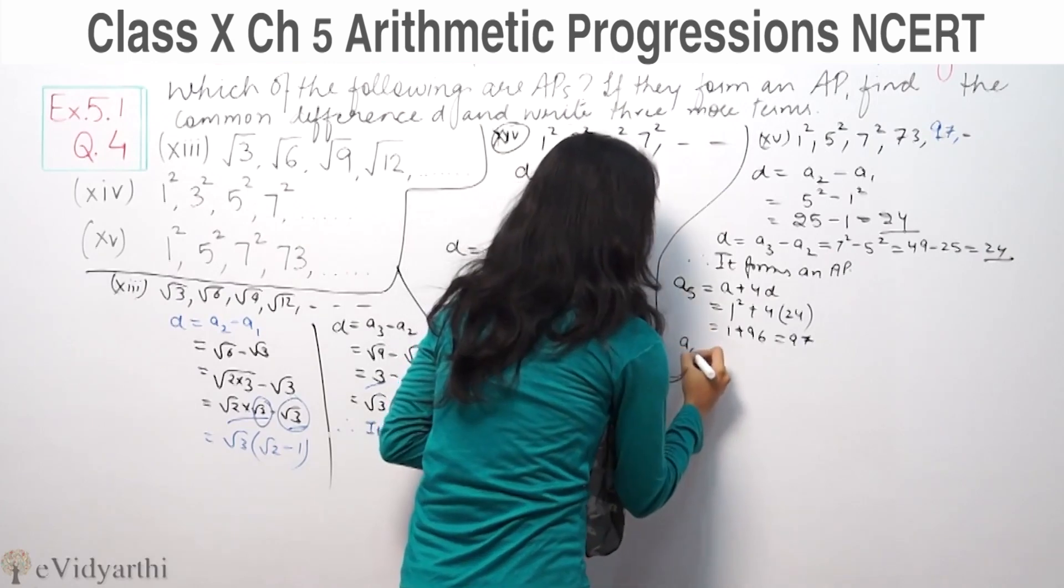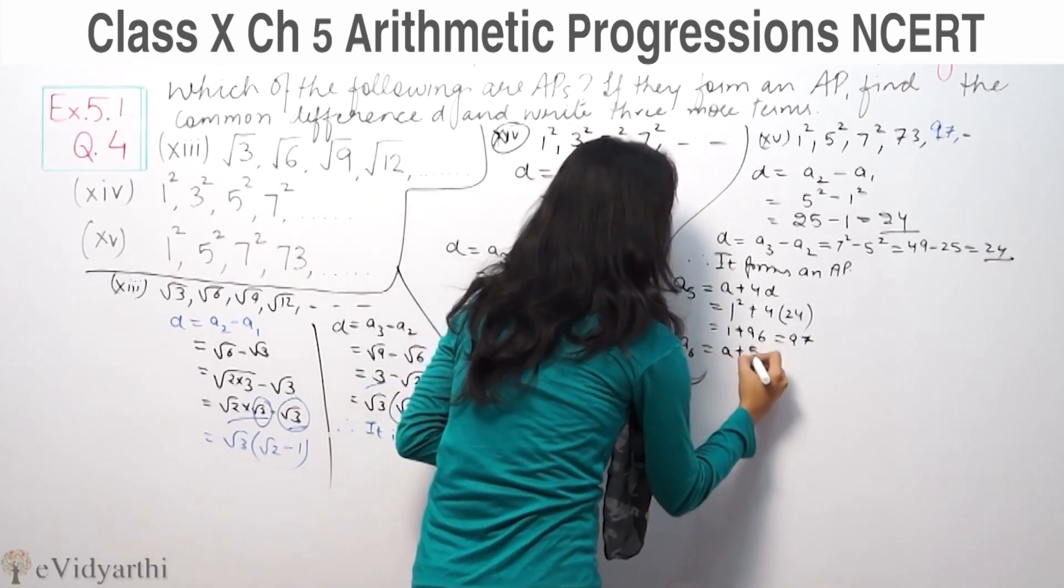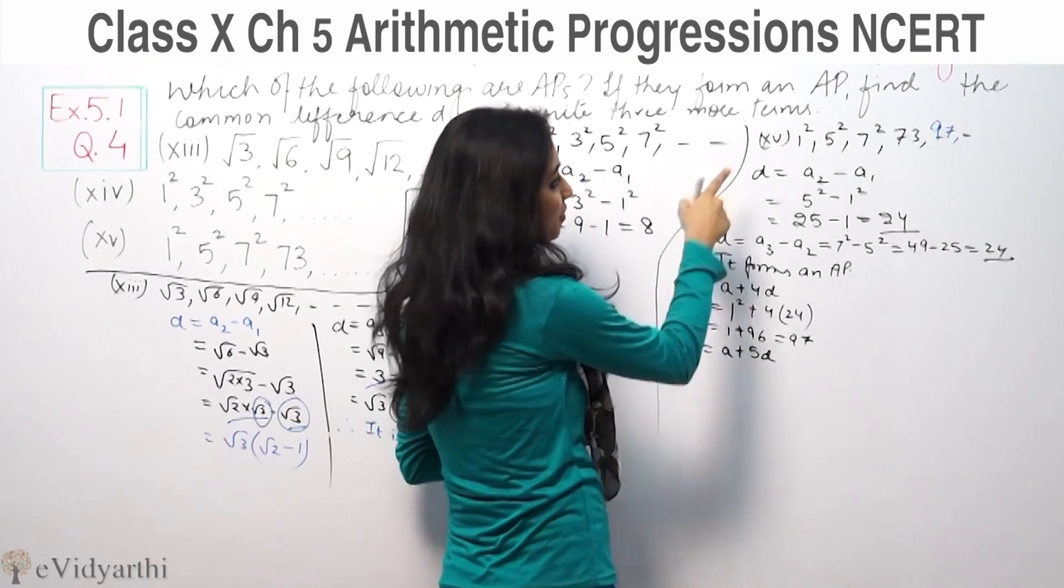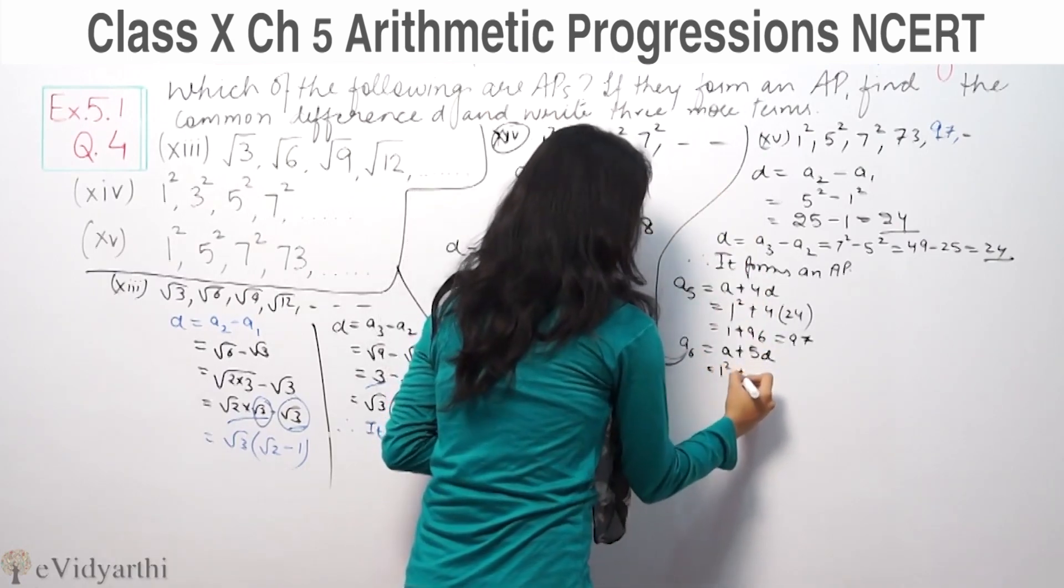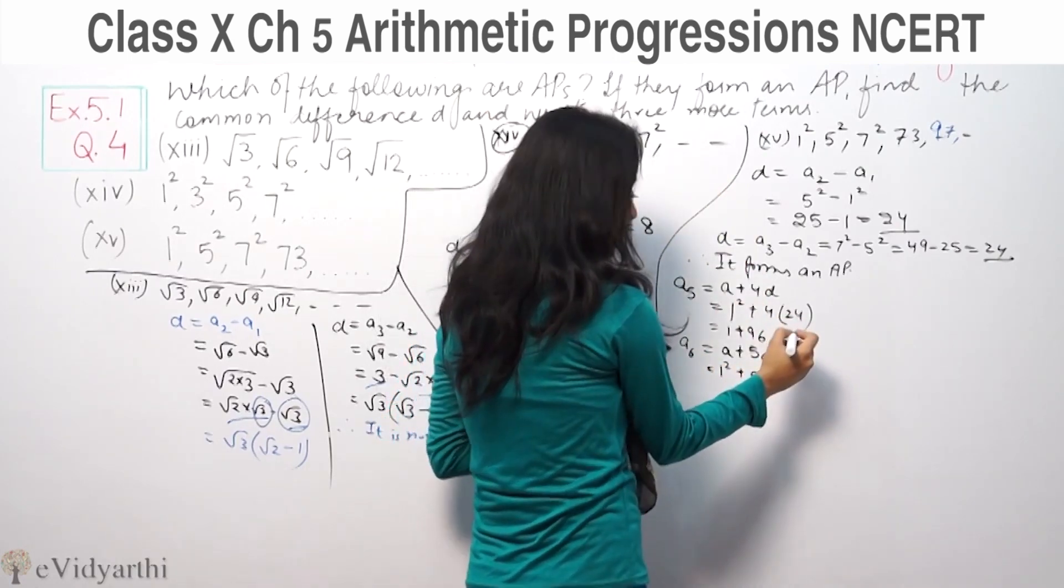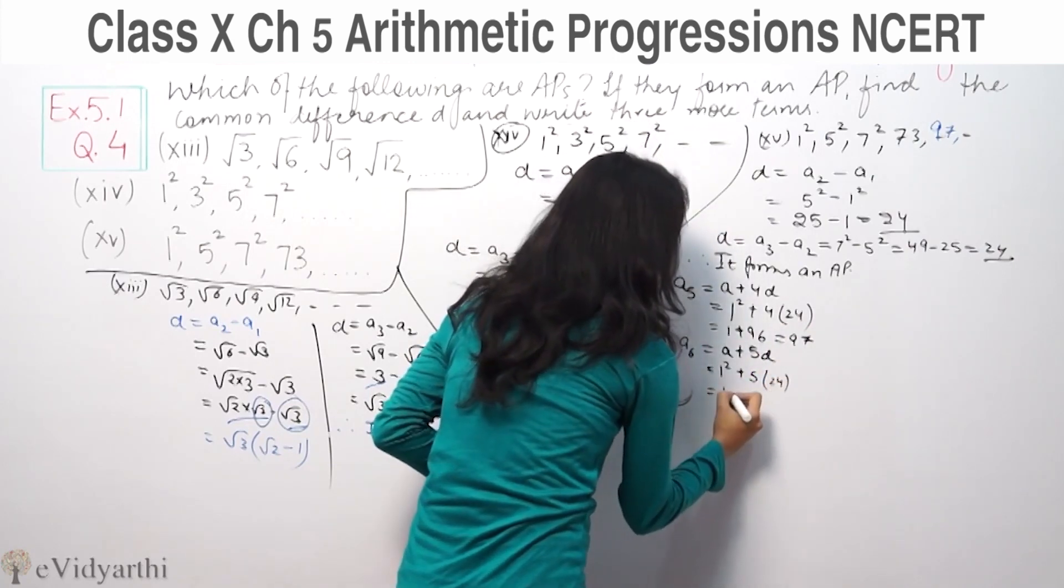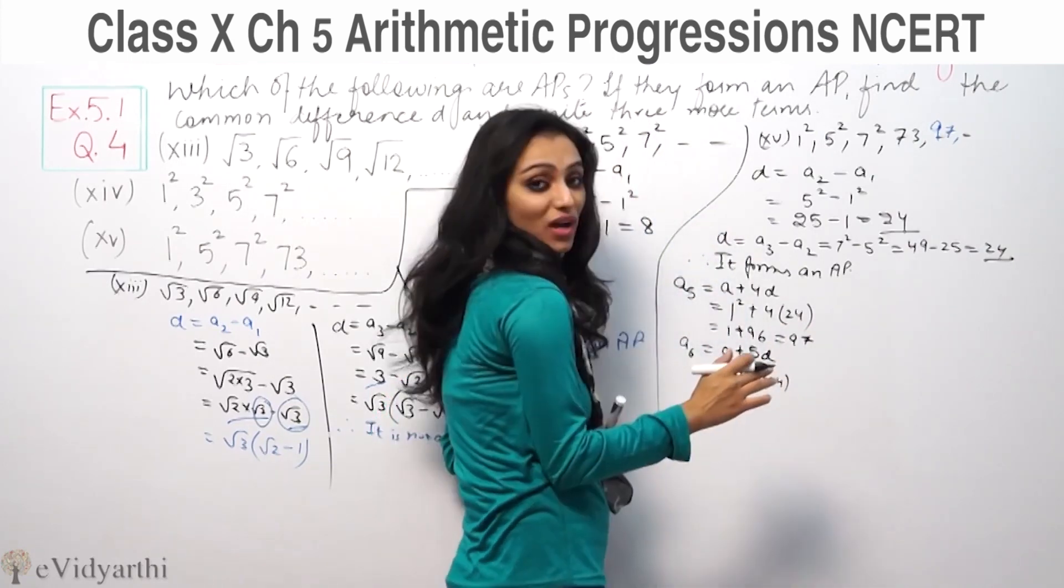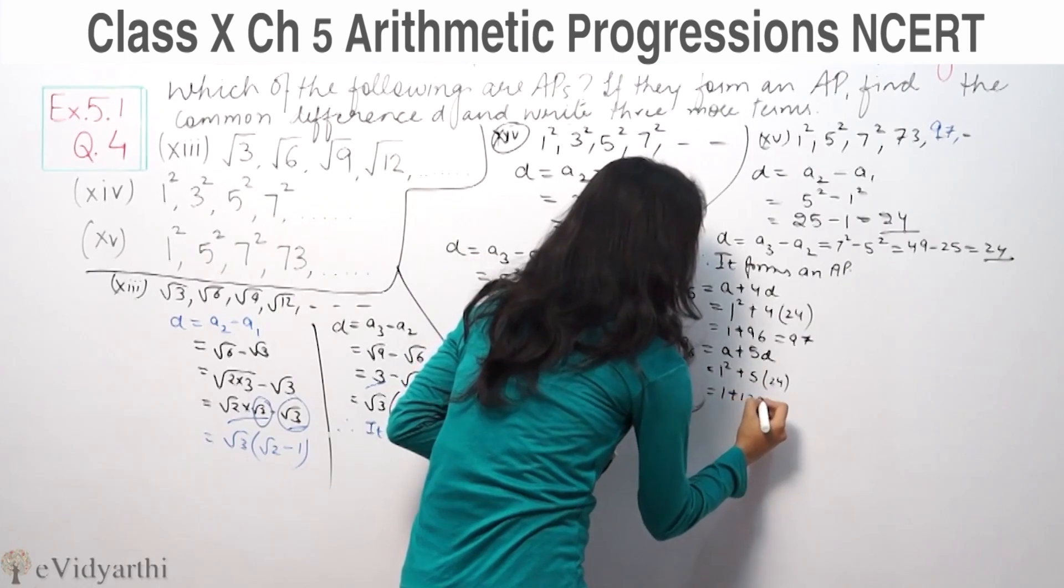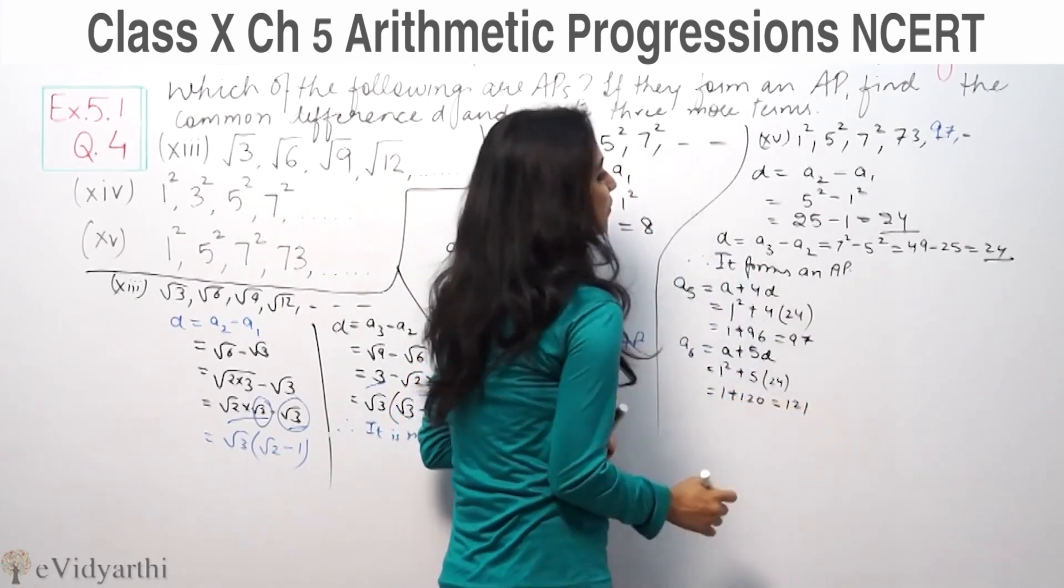Same way we need to check A6, which is A plus 5D. First term is 1 square plus 5 times D, which is 24. So 1 plus 24 into 5 equals 1 plus 120, which is 121.